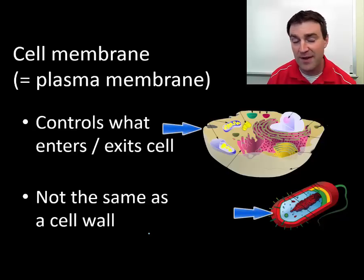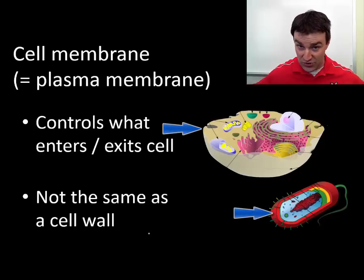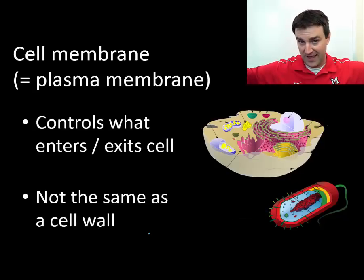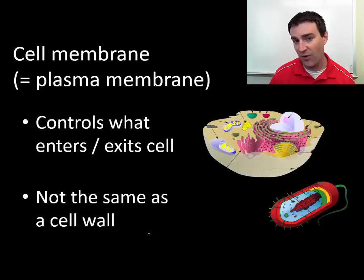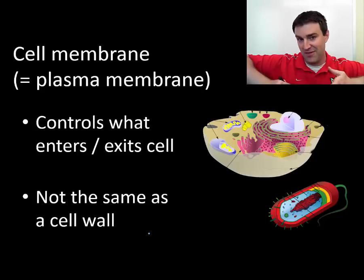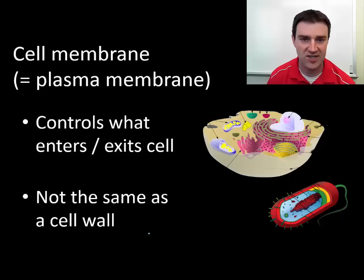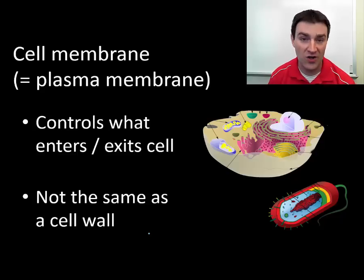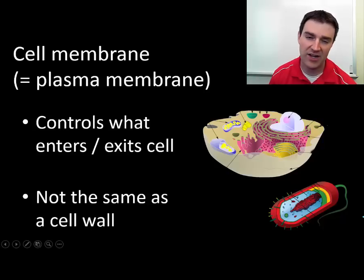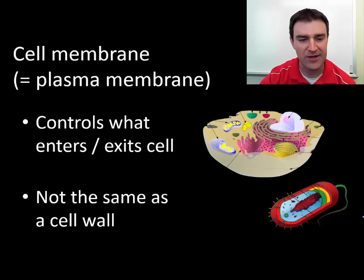The function of the membrane is to control what comes in and out of the cell. Cells want to let in nutrients, keep out bad things, let out wastes, and keep in what they want. The cell membrane is not the same thing as a cell wall — some organisms have both, but all cells must have a membrane.